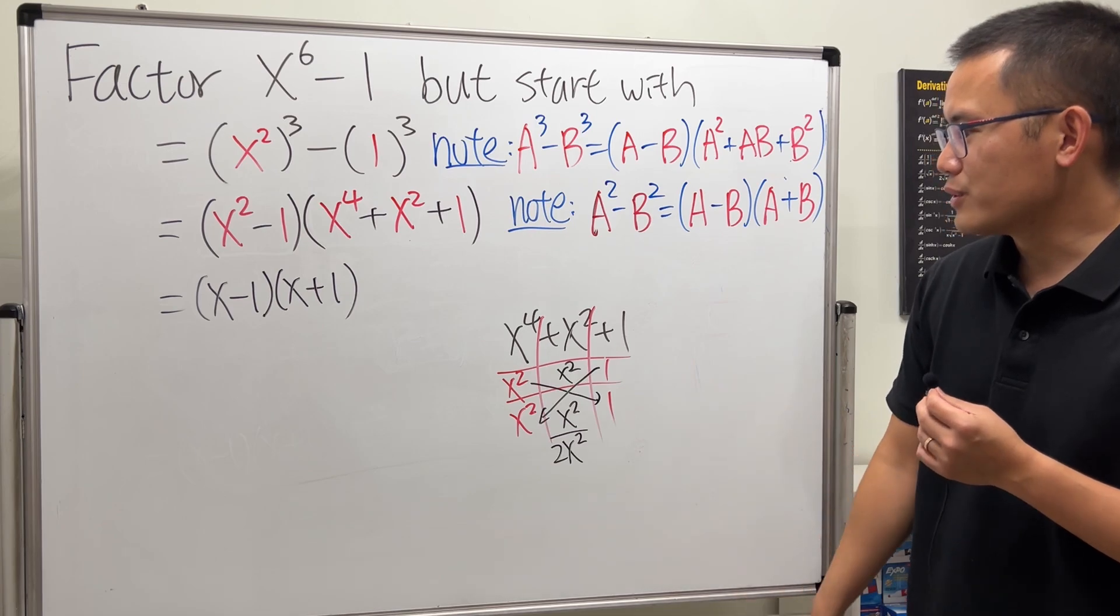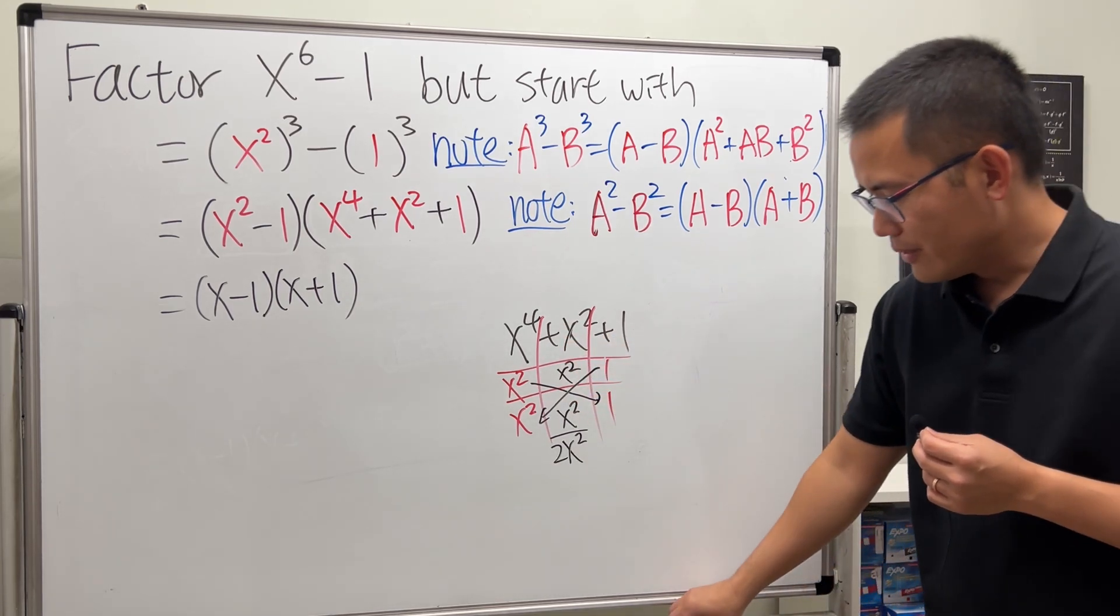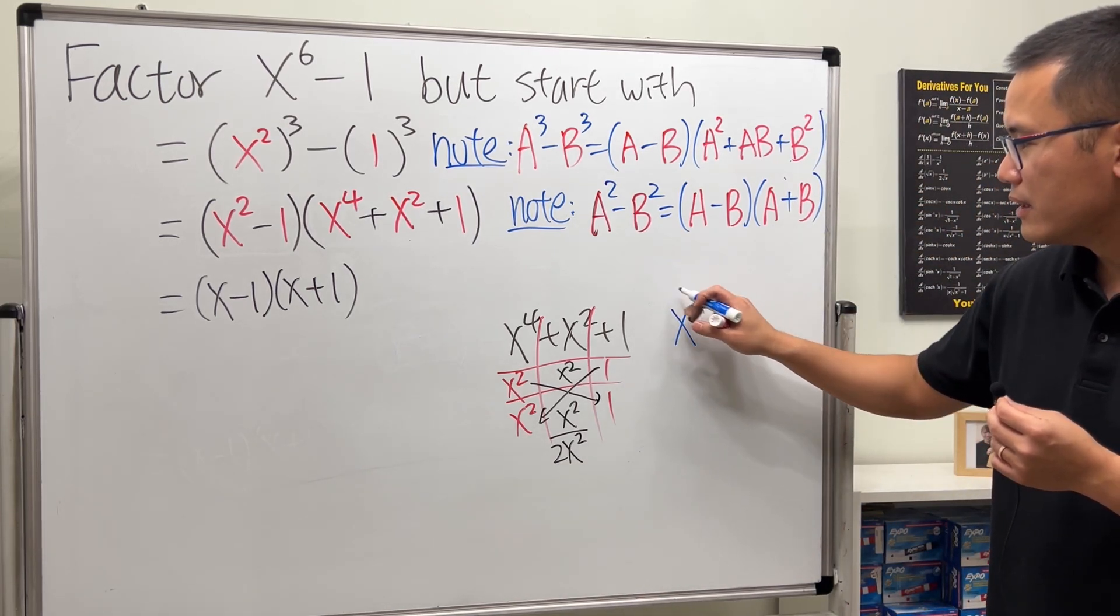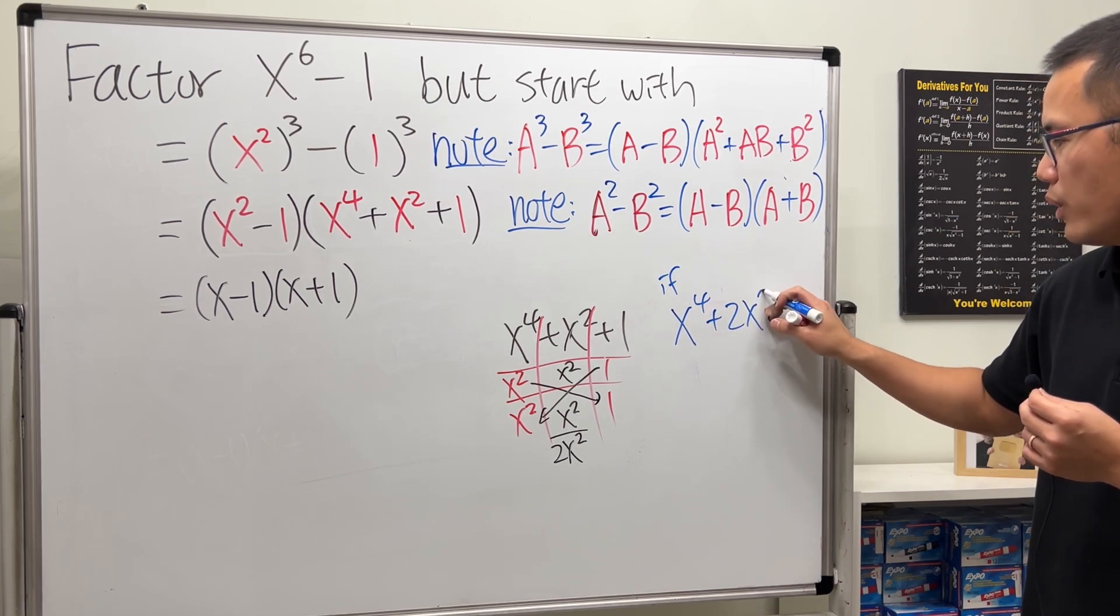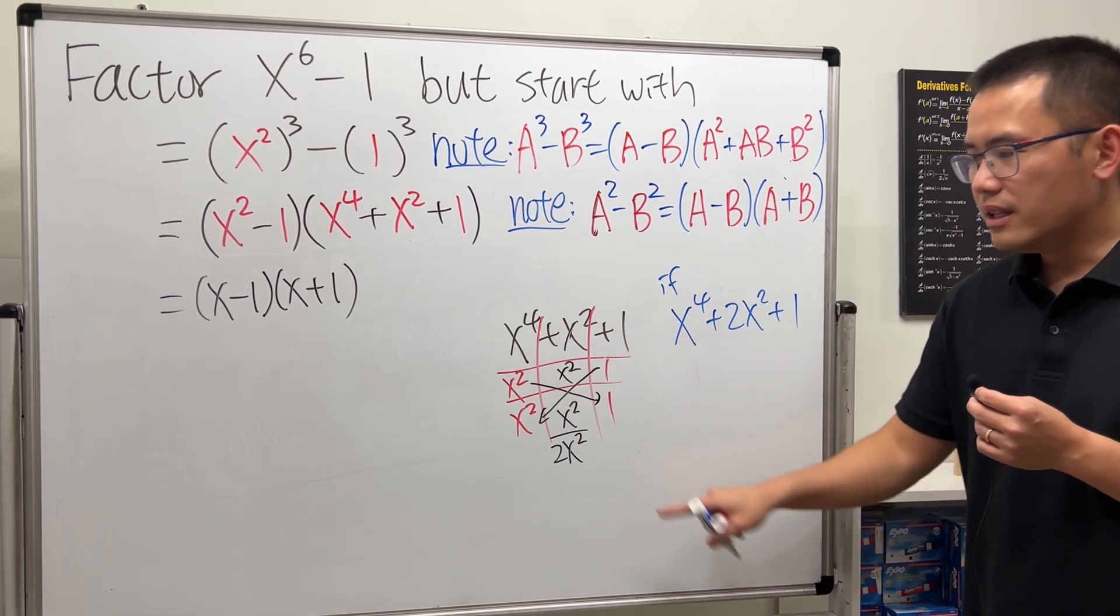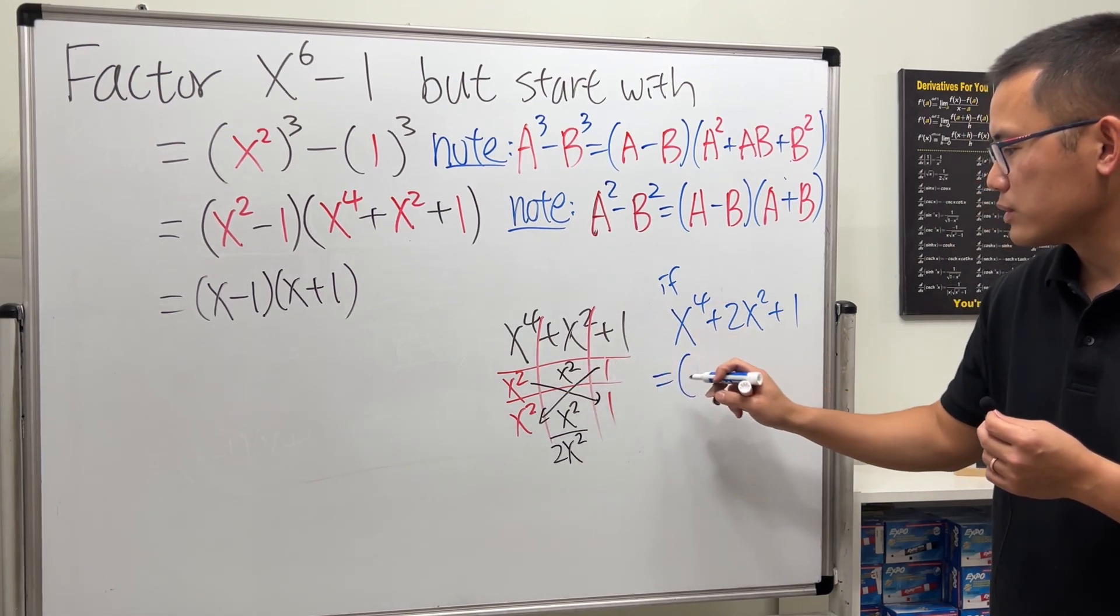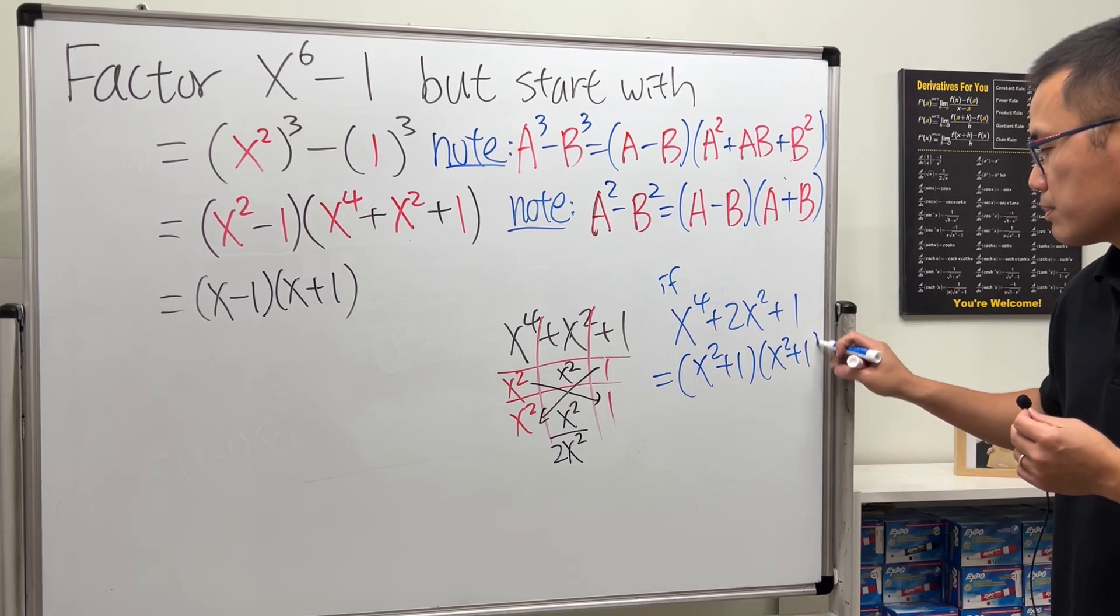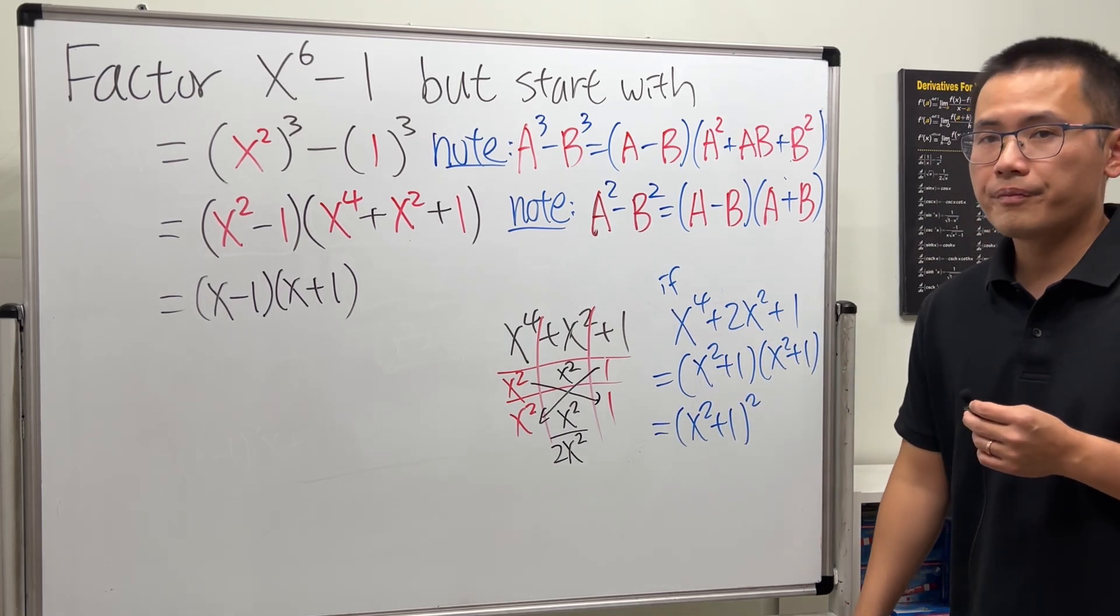So how do we really do it though? Well have a look, this right here it's not really factorable, but another easier version is if we have a 2 right here. So this is why I want to point out, if we happen to have x⁴ + 2x² + 1, then the tic-tac-toe works out wonders. And this right here will just give us (x² + 1) times (x² + 1), which is just (x² + 1)².